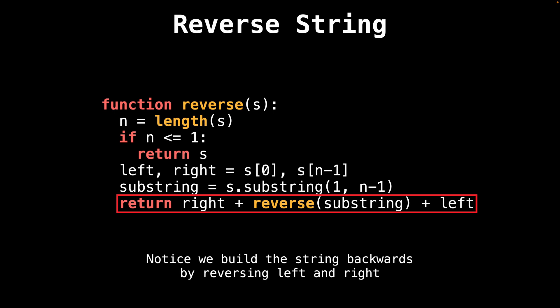Afterwards, we would recursively call the reverse function swapping the left and the right characters in the return statement as we build the string. And that's pretty much how we would reverse the string using the outside in method.